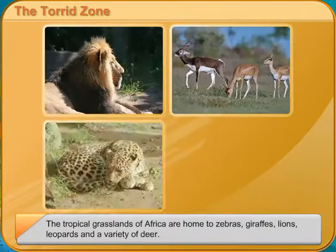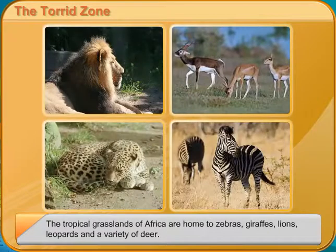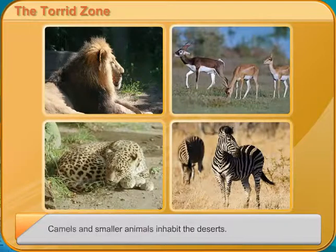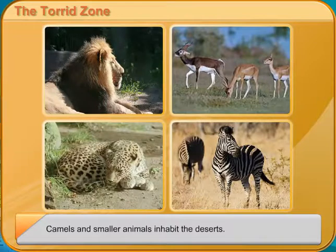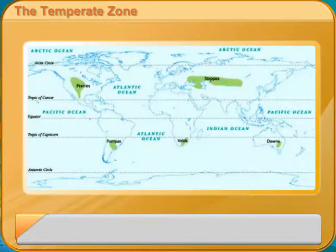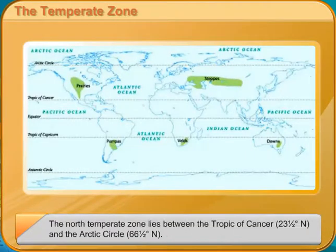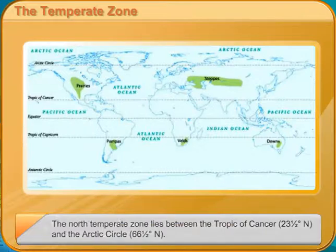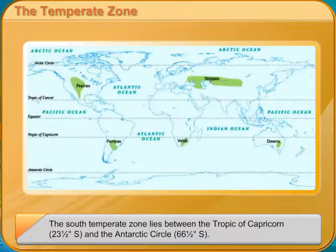The Temperate Zone. The north temperate zone lies between the Tropic of Cancer, 23.5 degrees north, and the Arctic Circle, 66.5 degrees north. The south temperate zone lies between the Tropic of Capricorn, 23.5 degrees south, and the Antarctic Circle, 66.5 degrees south. These zones have a mild temperature — not as hot as the Torrid Zone, and not as cold as the Frigid Zone.